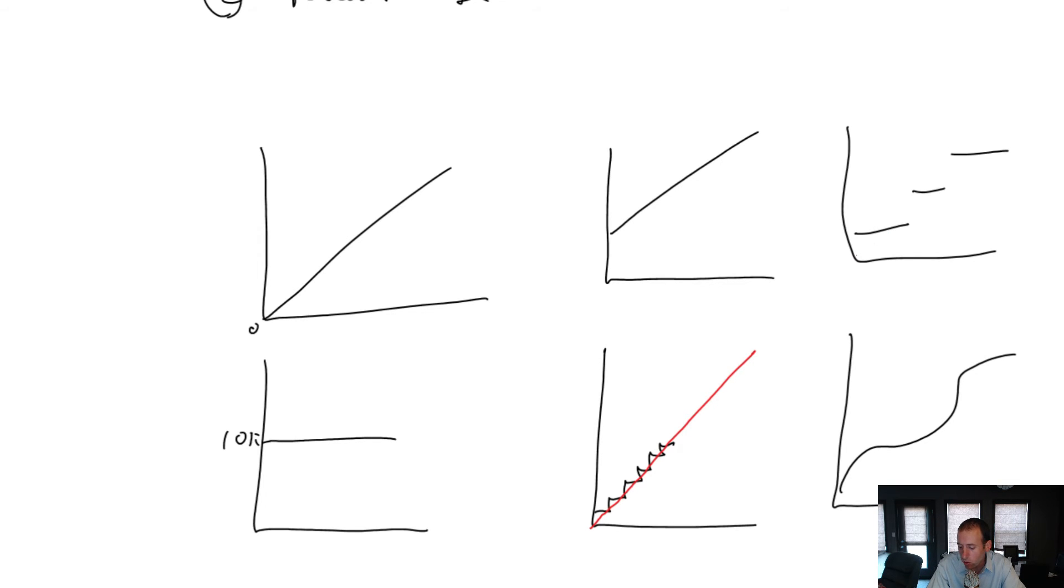Now, it doesn't work quite so well for this fixed cost because we could be pretty far off if we drew it through these longer stretches. However, what we can say here is, let's assume this is 50 units, 100 units, 150, 200, there's another line up there. And let's assume for the last 10 years we've made between 120 and 140. So in the past 10 years we've made between 120 and 140, we've fallen within there.